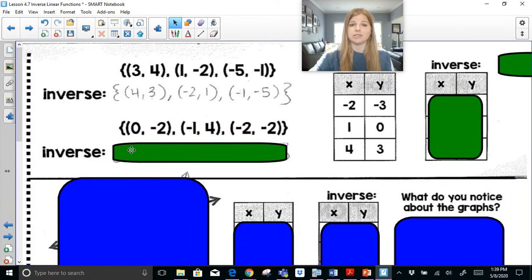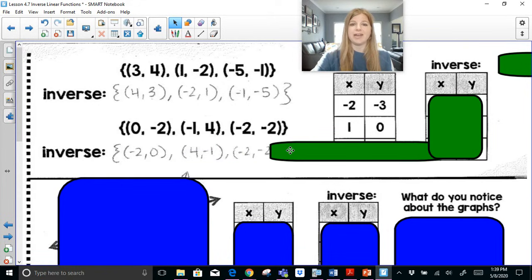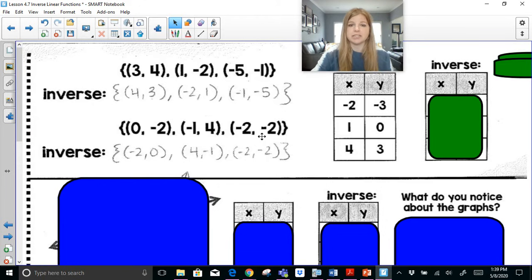The second inverse for this relation would be (-2, 0), (4, -1), and then (-2, -2). If the x and y values are the same, then it's just its own inverse.